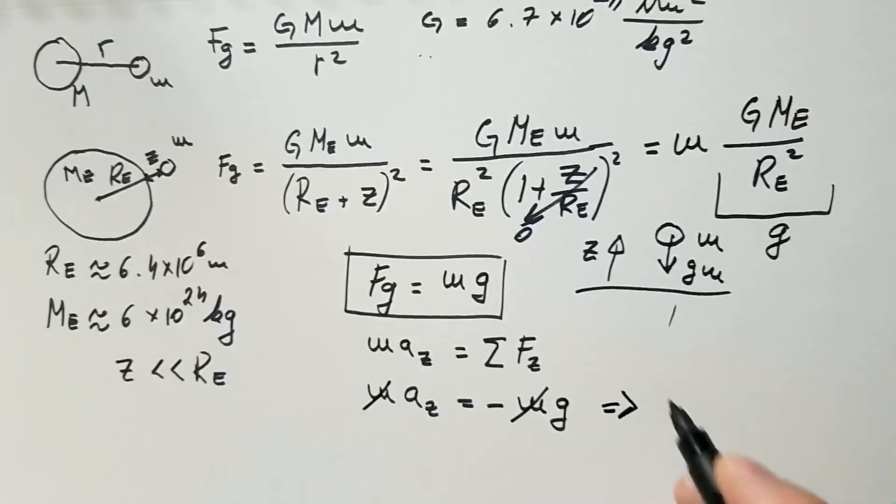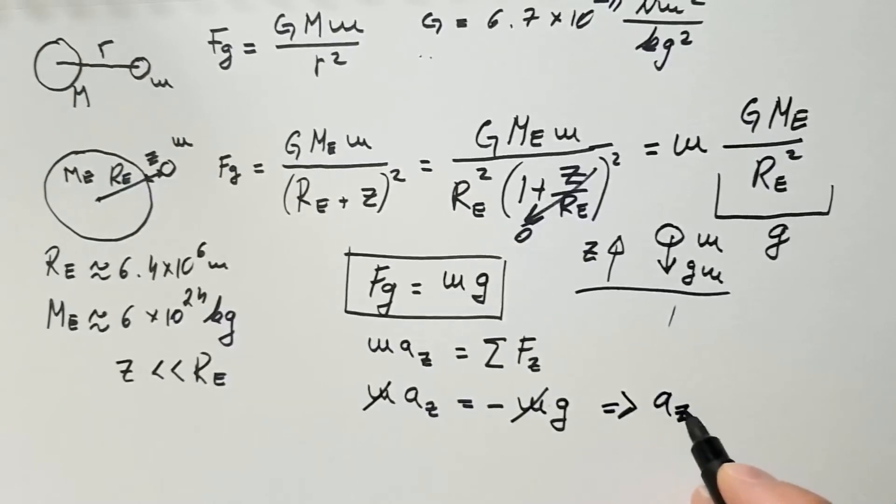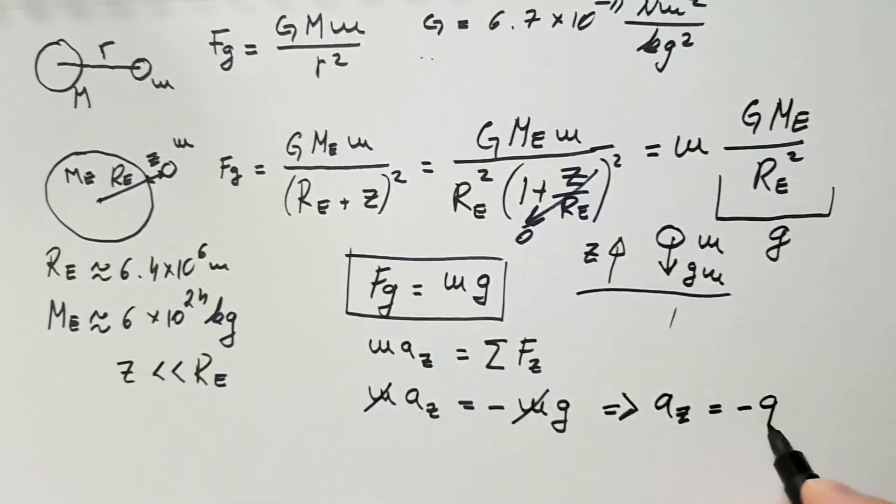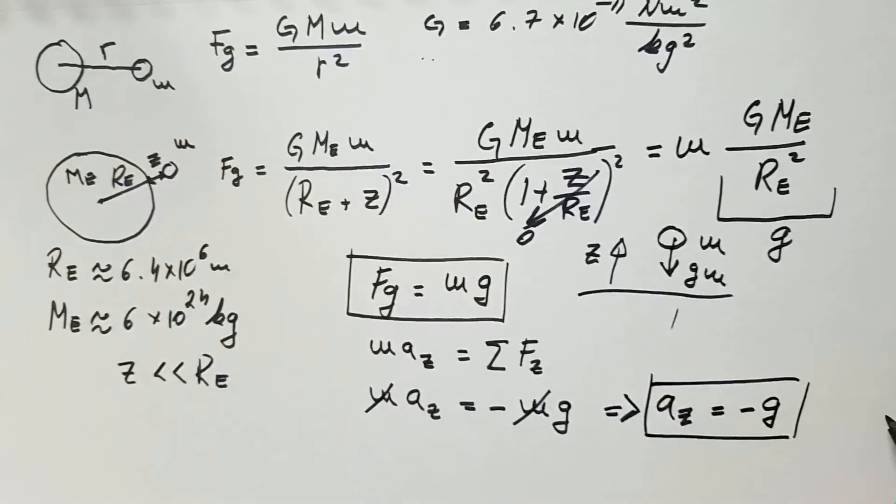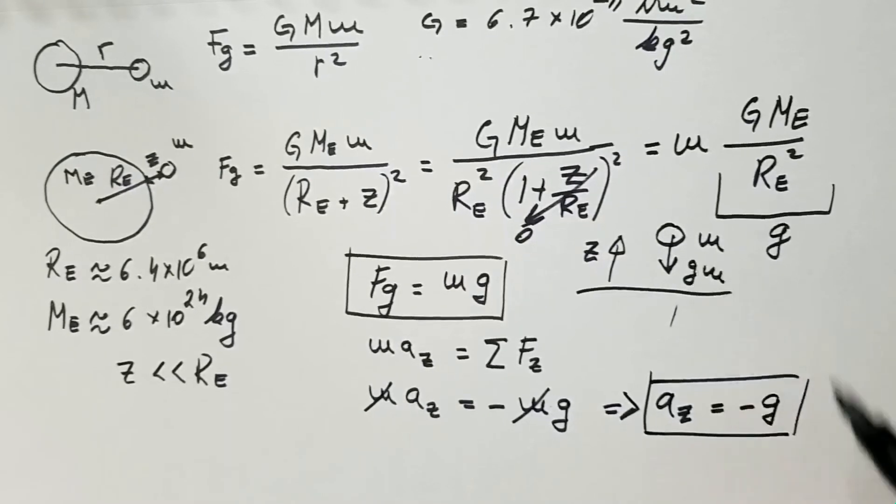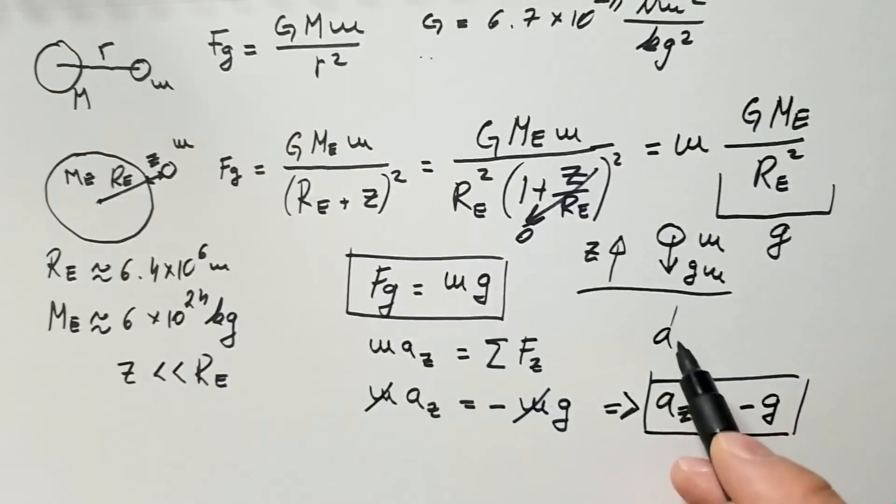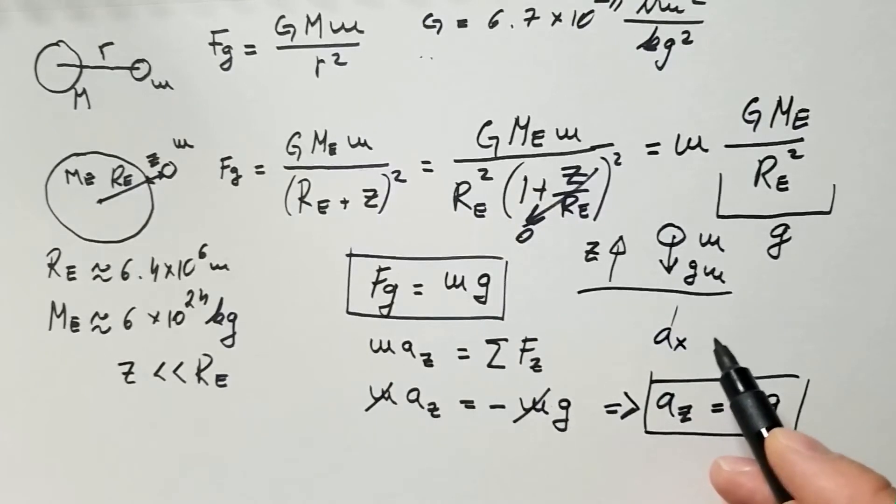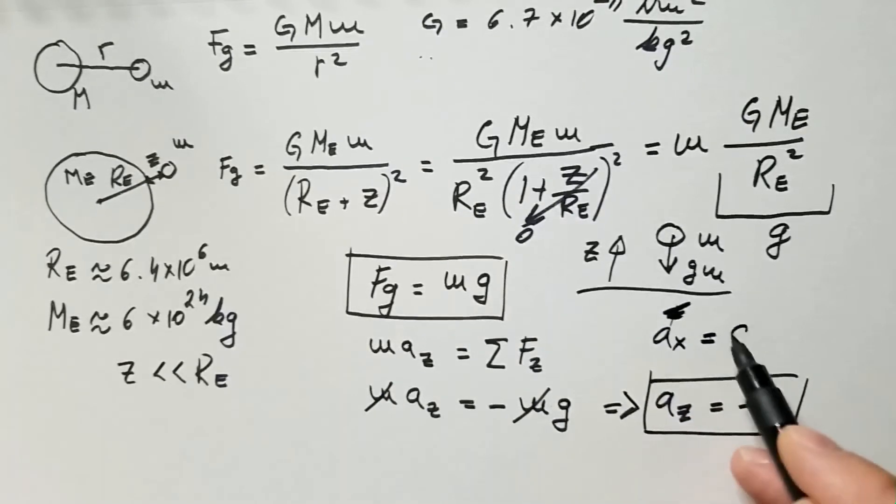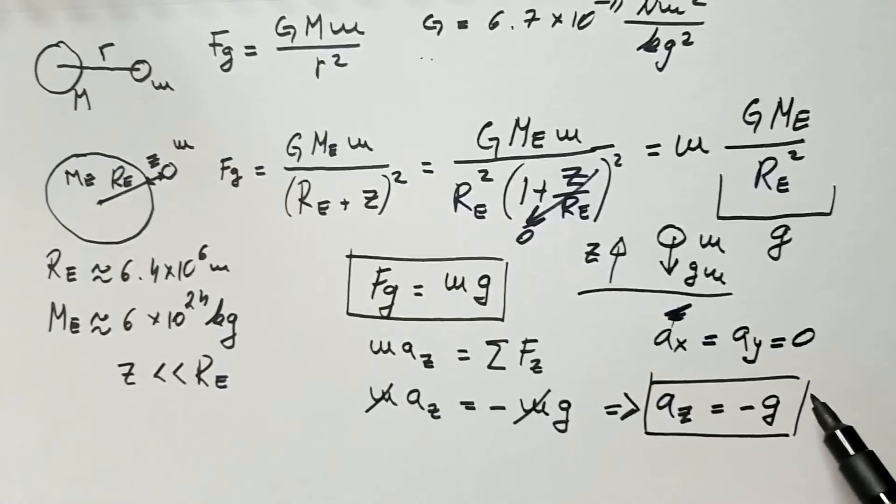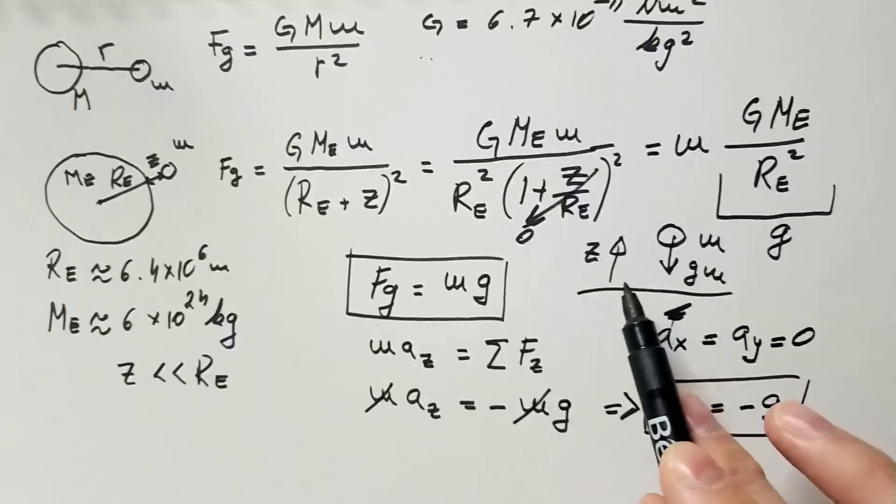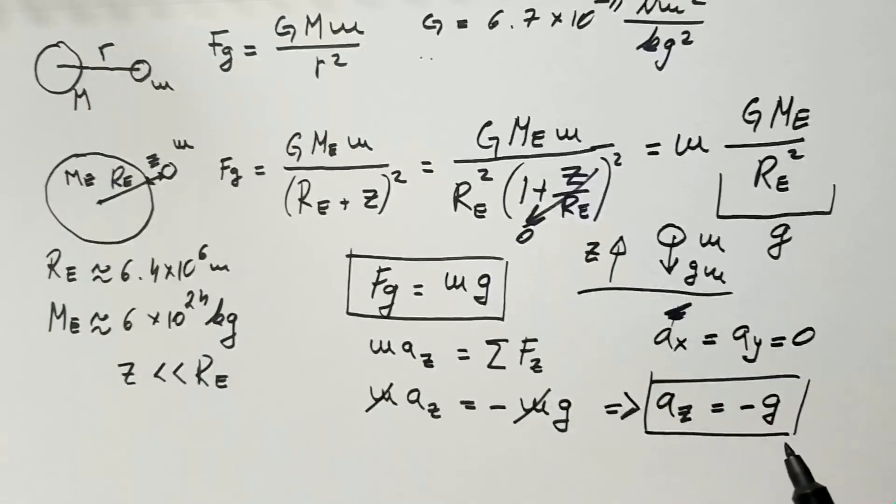and I get that a_z is equal minus g, or the acceleration in the vertical direction is negative g. You can clearly see that acceleration in the x direction is equal to the acceleration in the y direction, and that is zero. Namely, there is no acceleration due to gravity in the x and y direction in this particular problem.